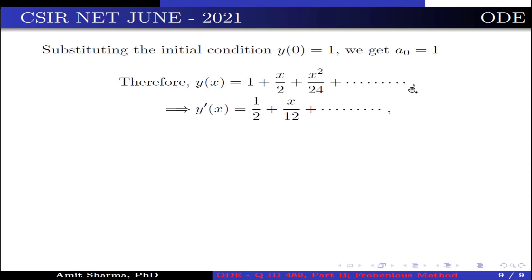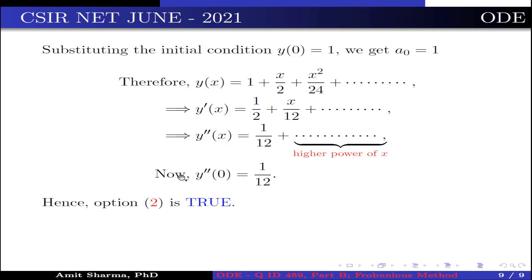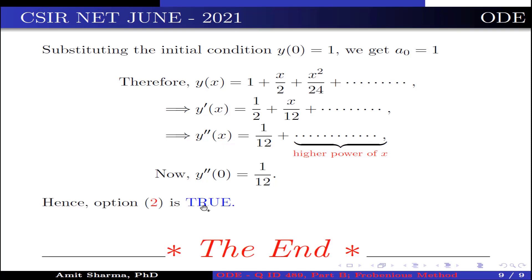Differentiating y(x) = 1 + x/2 + x²/24 + …, we get y'(x) = 1/2 + x/12 + …. Differentiating again, y''(x) = 1/12 + …, where remaining terms contain higher powers of x. Therefore, y''(0) = 1/12. Hence option 2 is correct.